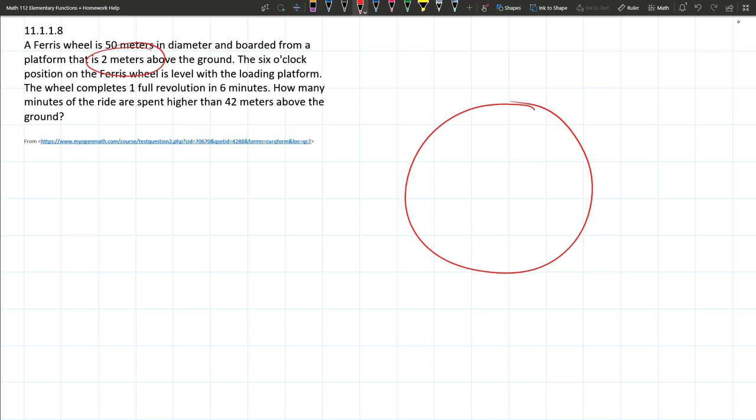I'm not sure if the platform is at the bottom or if you're going to board over here, so we're going to read a little bit more. The six o'clock position on the Ferris wheel, which will be at the bottom right there, is level with the loading platform.